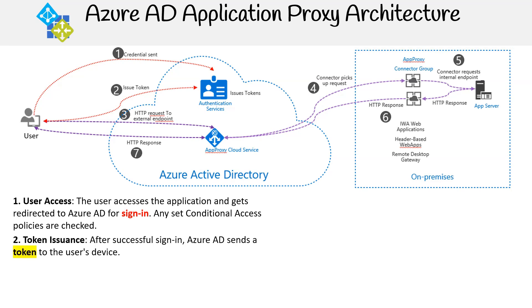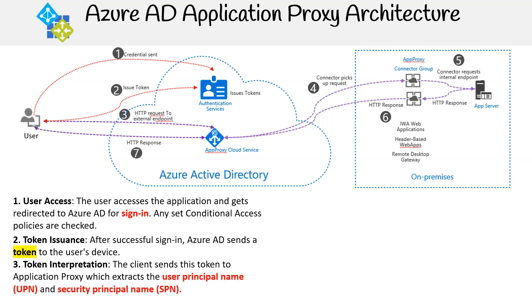Step two is token issuance: after successful sign-in, Azure AD sends a token to the user's device. Step three is token interpretation: the client sends this token to Application Proxy, which extracts the user principal name and security principal name.